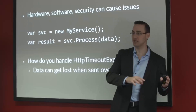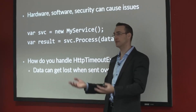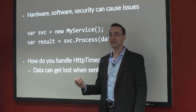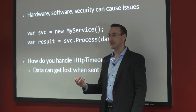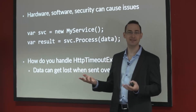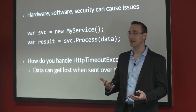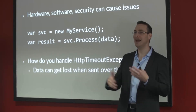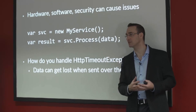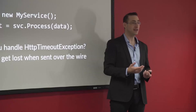Then we start deploying things to production and users start playing with the system, and they say the system is slow. Now we're kind of stuck — where exactly is the system slow? What is the culprit? We've done such a good job of hiding from ourselves where all of the remote invocations are that it becomes that much harder to find the problem.